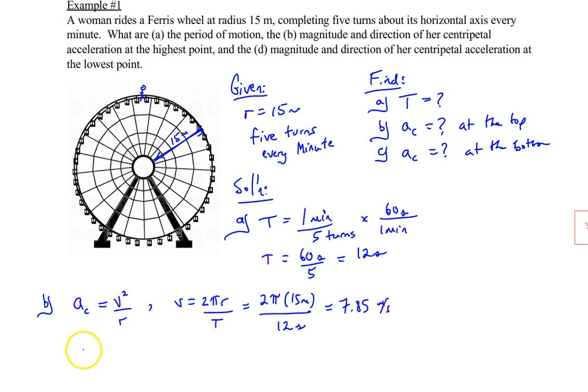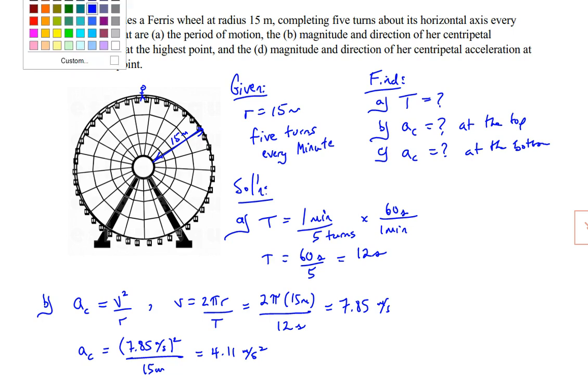So now let's go ahead and substitute that into our centripetal acceleration equation. So 7.85 meters per second squared divided by our radius, which is 15 meters. And this gives us an answer of 4.11 meters per second squared. Now, what is the direction of it?